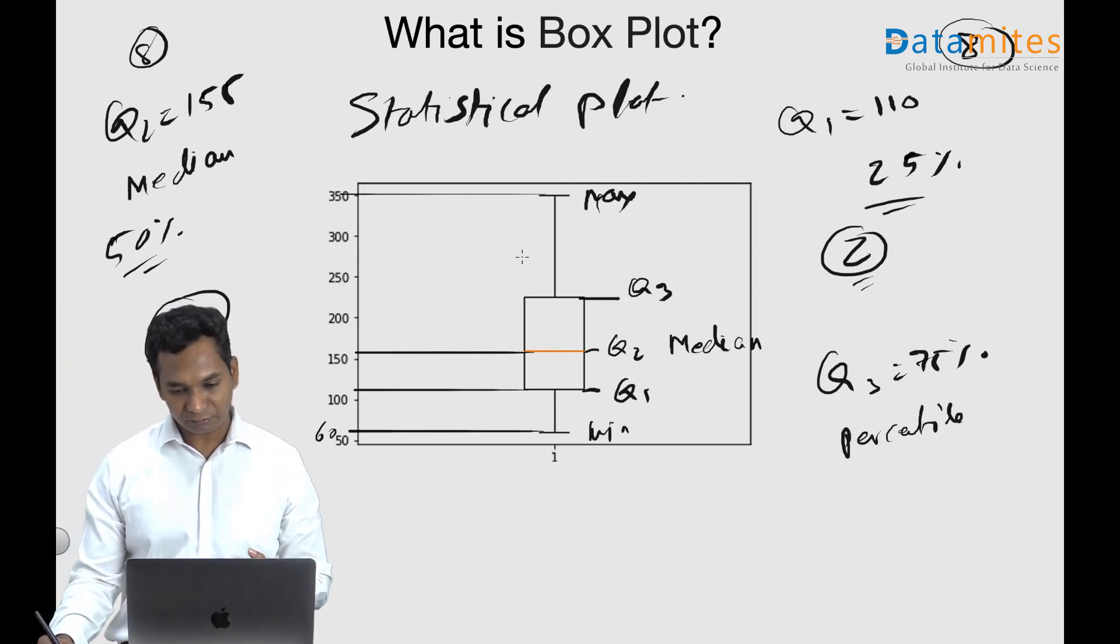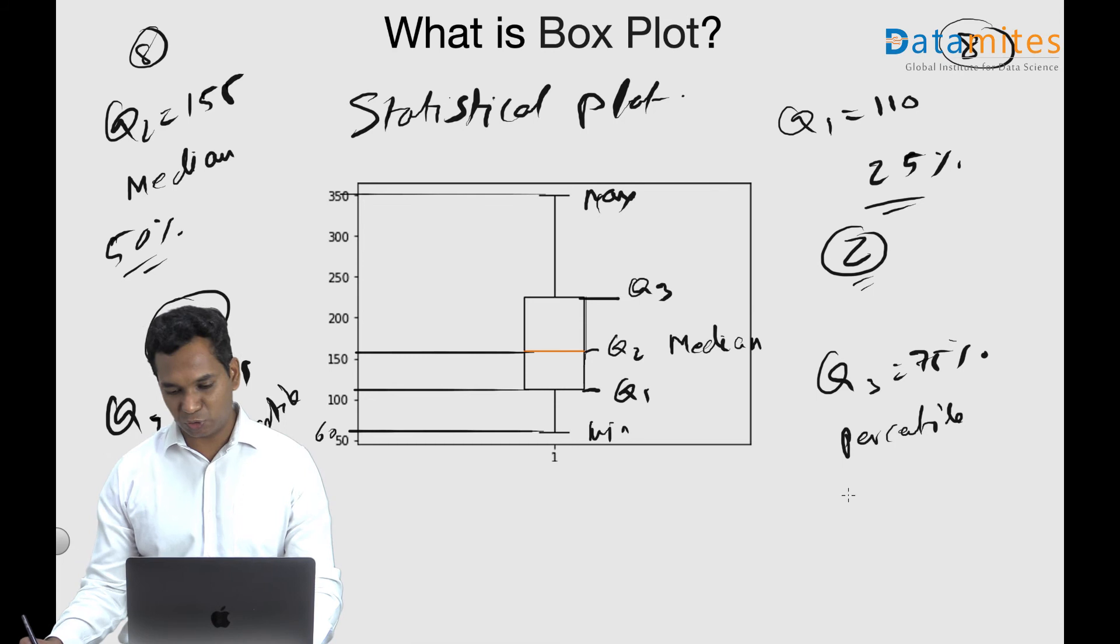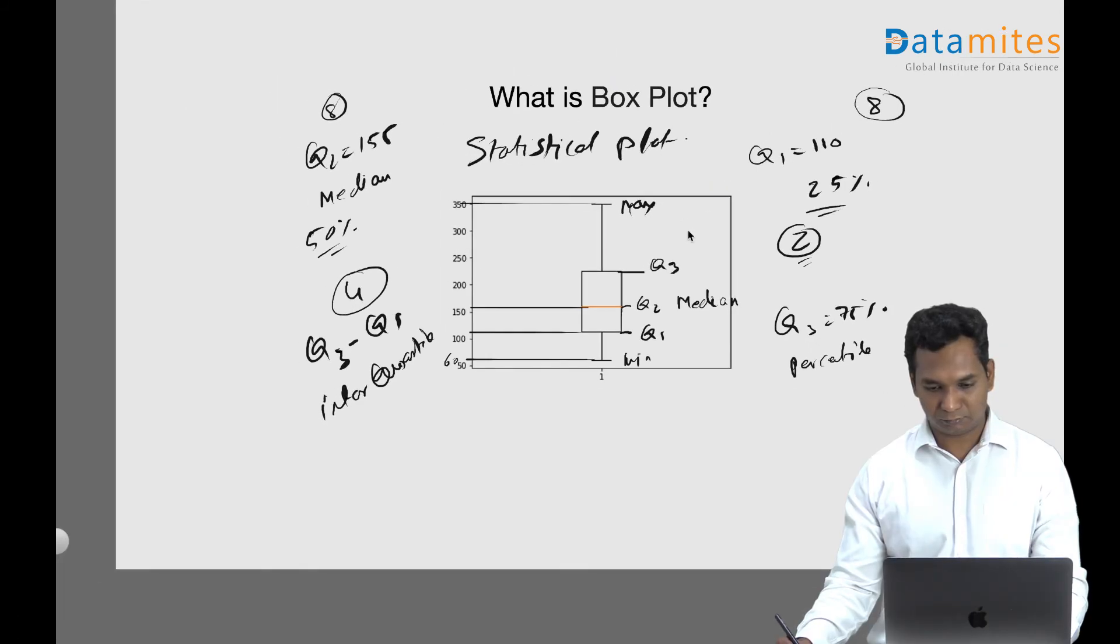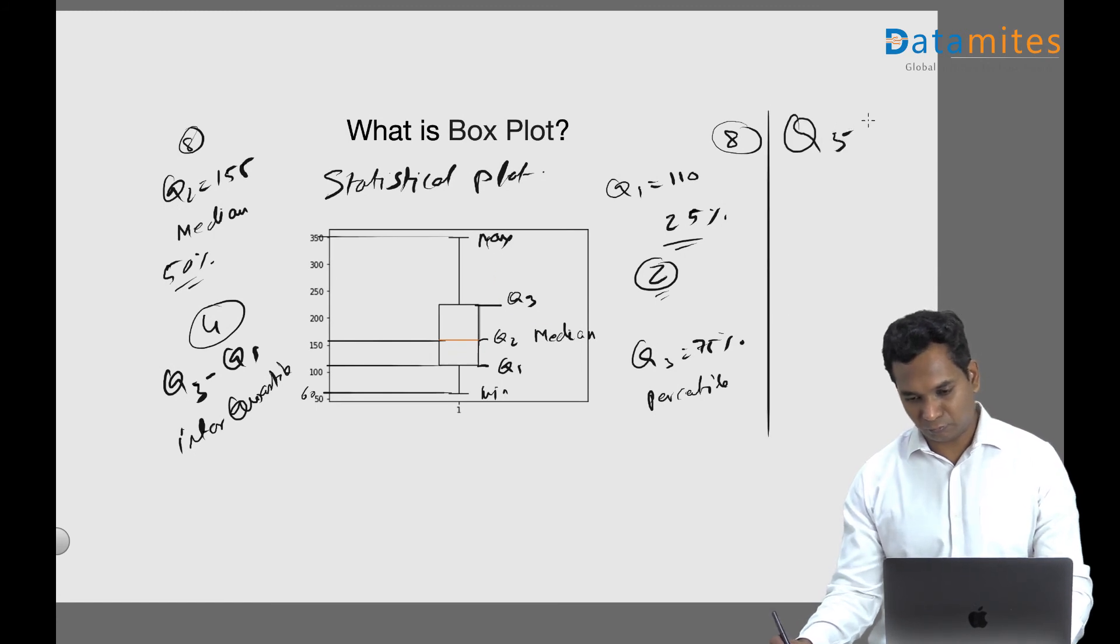We also can see what is the variation, which is Q3 minus Q1, called as the inter quartile range. So Q3 minus Q1 is called as inter quartile range.